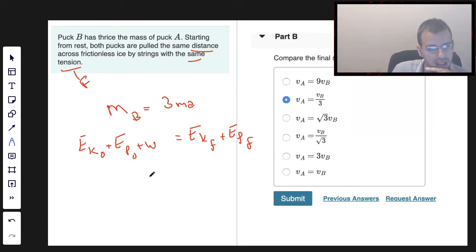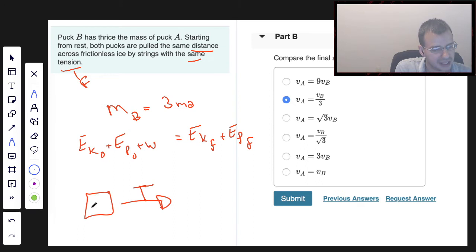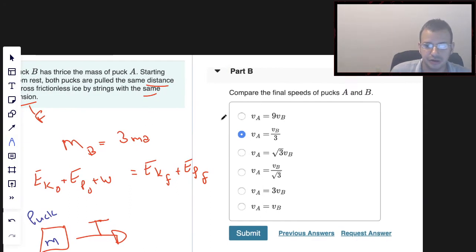So looking at this, we draw a picture: puck being pulled that way. So this will be force, which is the same as tension. So we'll use tension just because that's what they call it. And this is a puck, and we want to know the final speeds, V final.